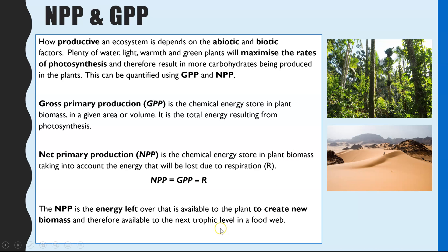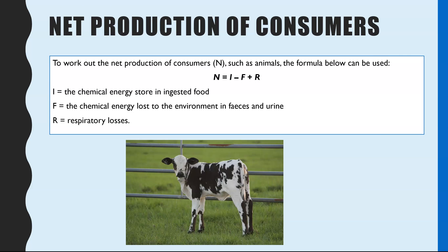Looking at two examples — a rainforest and a desert ecosystem — the rainforest has plenty of water, lots of green plants, and both have lots of light availability, but the rainforest will have far more photosynthesis. It therefore has a much higher GPP and a higher NPP, so a rainforest ecosystem is far more productive compared to a desert.